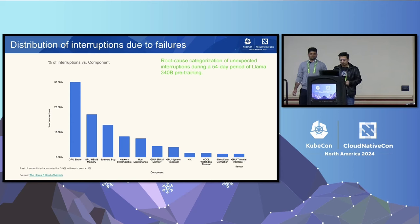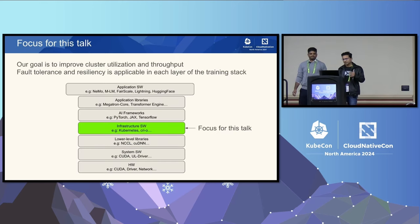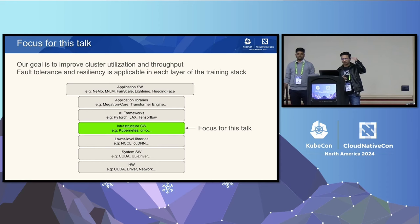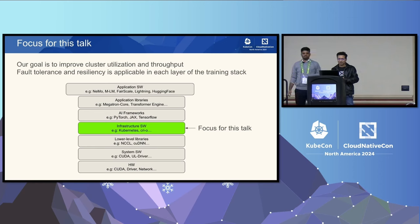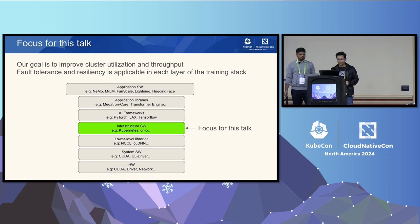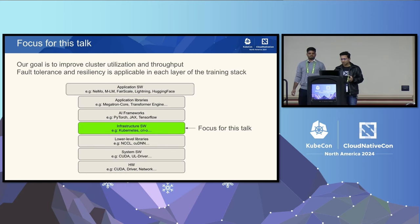While resiliency for AI is a multi-layer concern applicable in every layer of the stack — from application software to libraries, frameworks, lower-level libraries, system software, kernel drivers, and even the hardware — the focus of this talk is on the Kubernetes infrastructure.